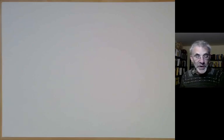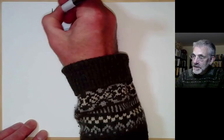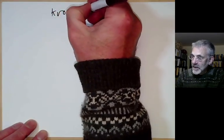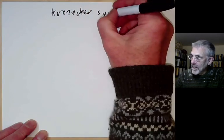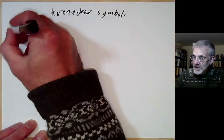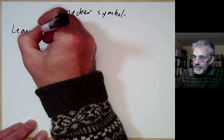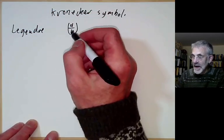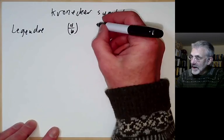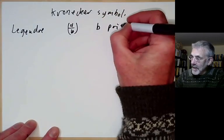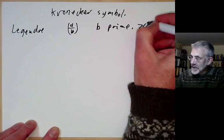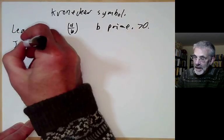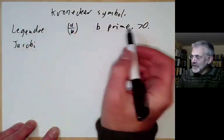This lecture is part of Berkeley Math 115, an introductory undergraduate course on number theory, and will be about the Kronecker symbol. We've previously discussed the Legendre symbol, written (a/b), which tells you whether or not a is a quadratic residue of b, where b is a prime and greater than zero.